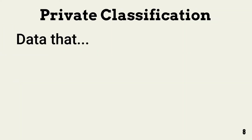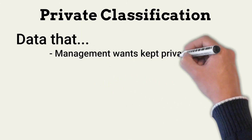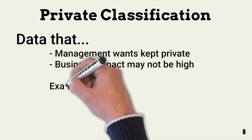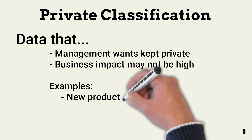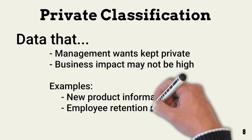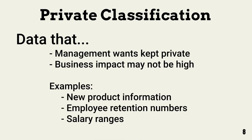Data that falls under the private classification might not do a lot of damage to a business, but management wants it kept private. Examples include detailed information about a new product, employee retention numbers, and salary ranges.